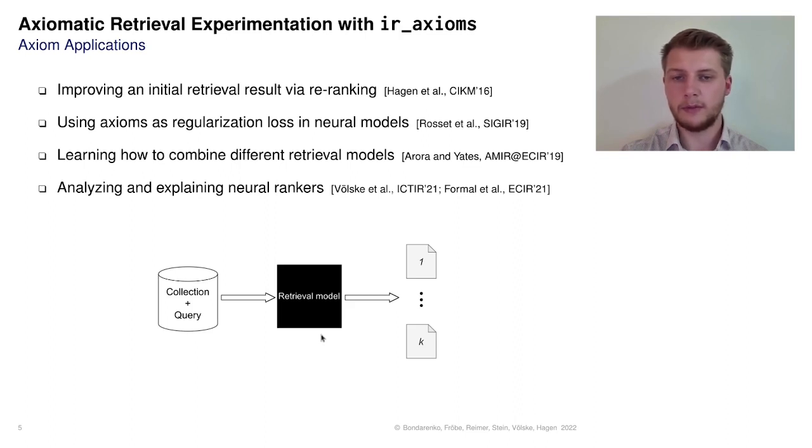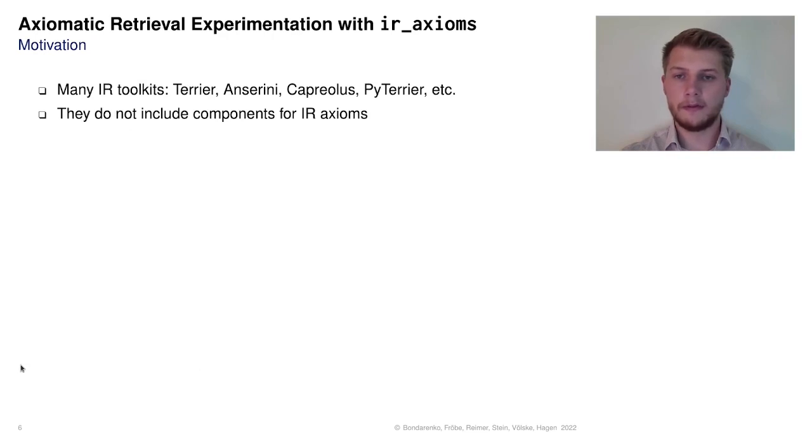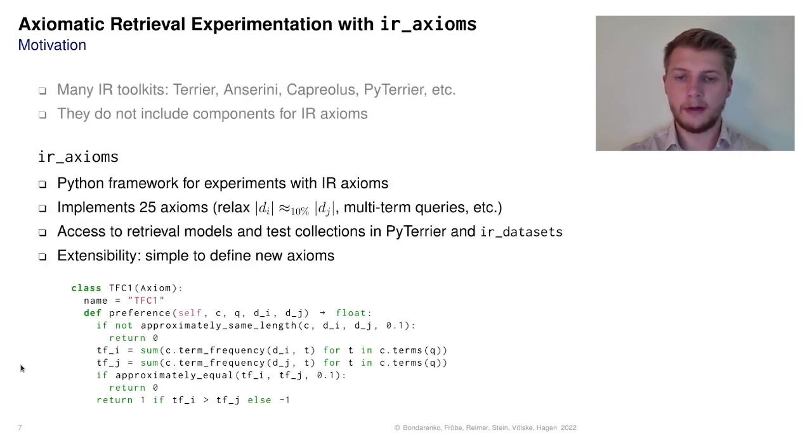Recently, axiom preferences have also been used to analyze and explain ranking decisions of such neural rankers. Even though many great software frameworks have been developed that allow easy implementation and evaluation of retrieval pipelines, none of the existing frameworks includes components for retrieval axioms. To close this gap, we present IR axioms, a Python framework for easy experimentation with IR axioms, in which we implemented 25 existing axioms.